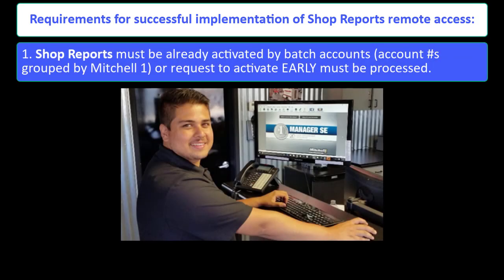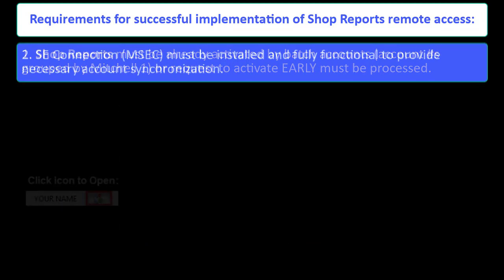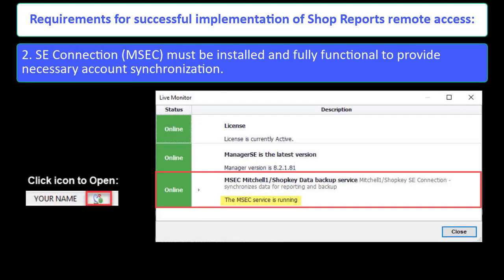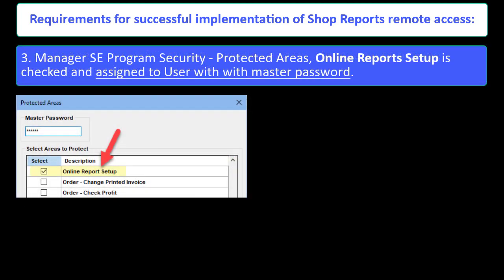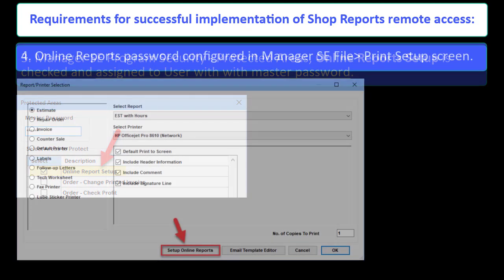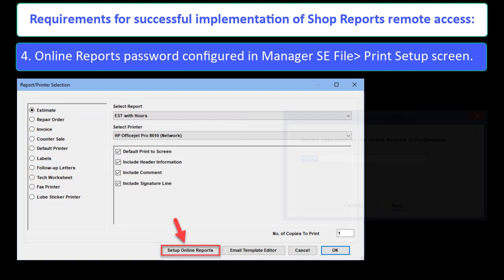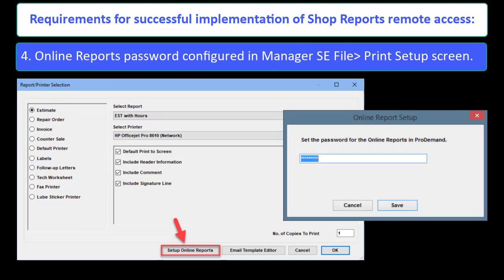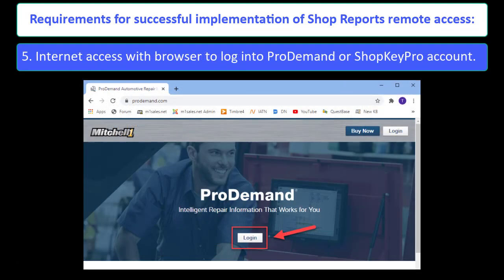Here are the requirements for a successful implementation of Shop Reports remote access: Shop Reports must be already activated by batch accounts, or requests to activate must be processed. SE Connection must be installed and fully functional to provide necessary account synchronization. Manager SE Program Security Protected Areas — Online Report Setup — must be checked and assigned to a user with the master password. Online Reports access password must be configured inside Manager SE File, Print Setup screen. Internet access with a browser is required to log into a ProDemand or ShopKey Pro account.